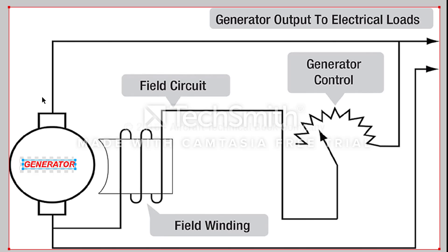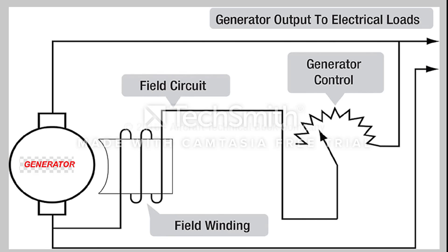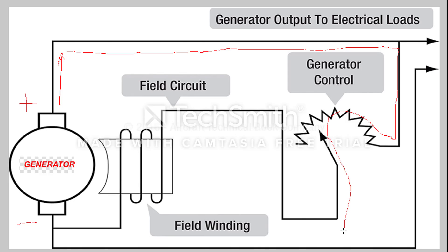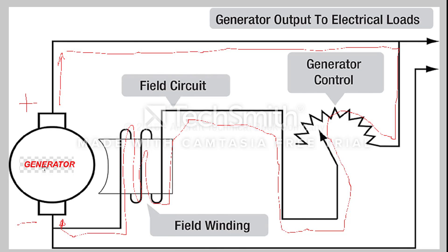The current is flowing positive to negative. The current is flowing from the generator in this direction, down through the variable resistor, and then down through the coil back to the negative terminal of the generator. We are using conventional current. As the current moves through the circuit from left to right, it creates a magnetic field at the coil. That magnetic field creates a voltage as the generator rotates through it, due to a law called Faraday's Law.